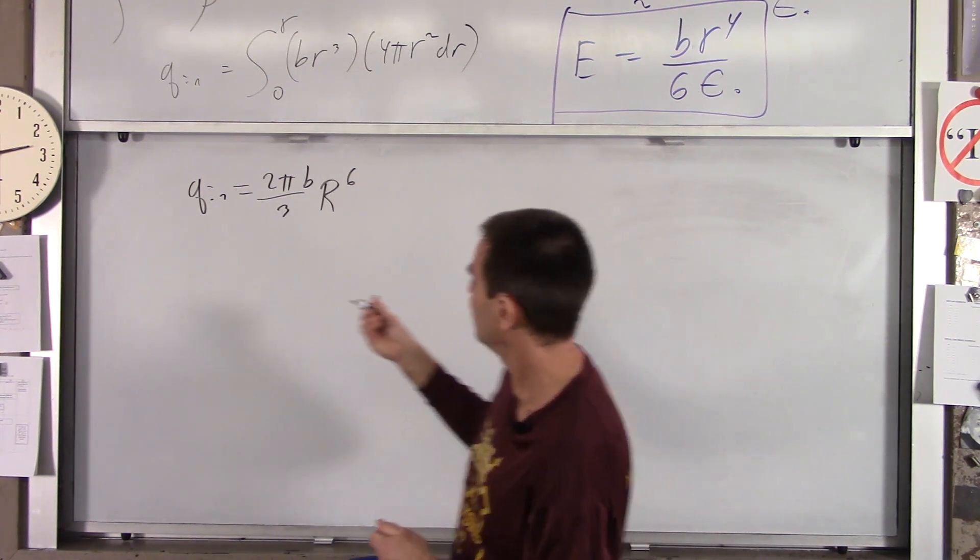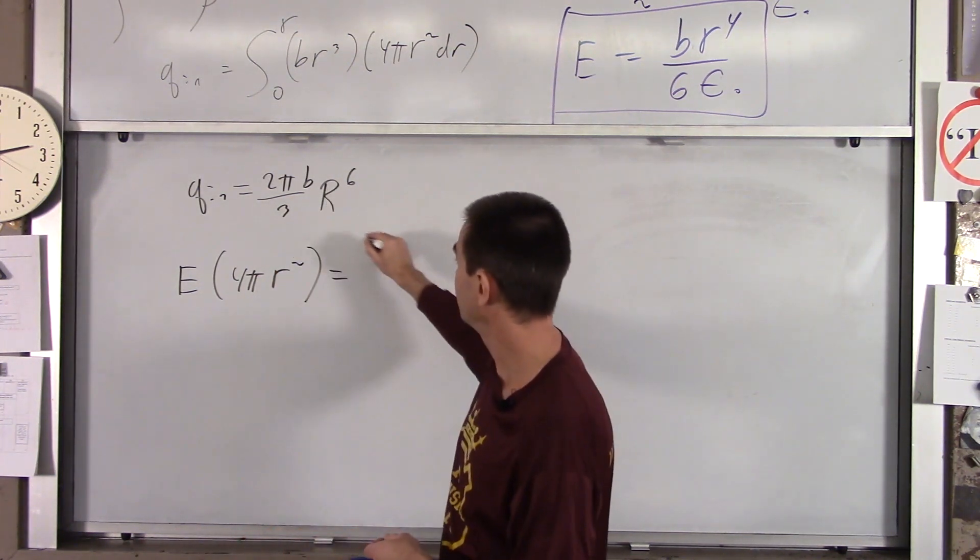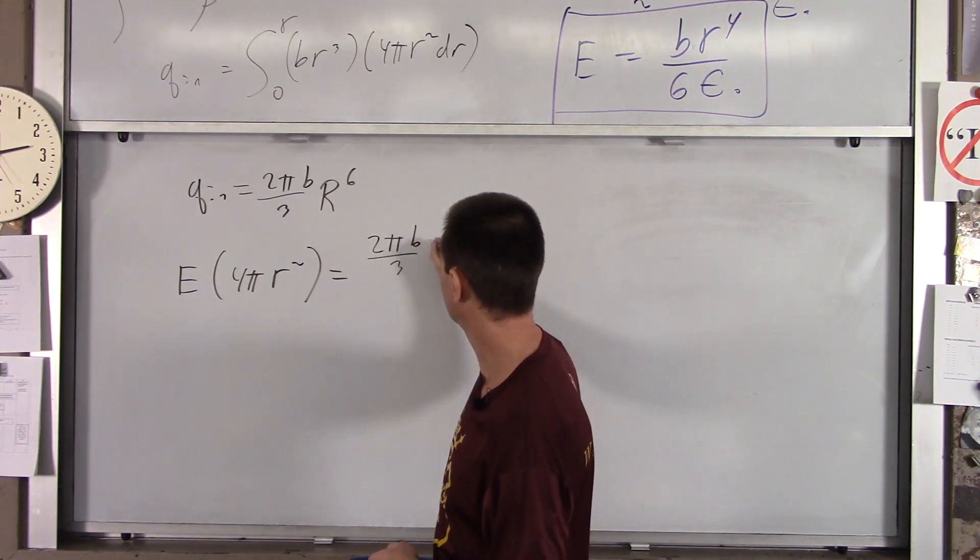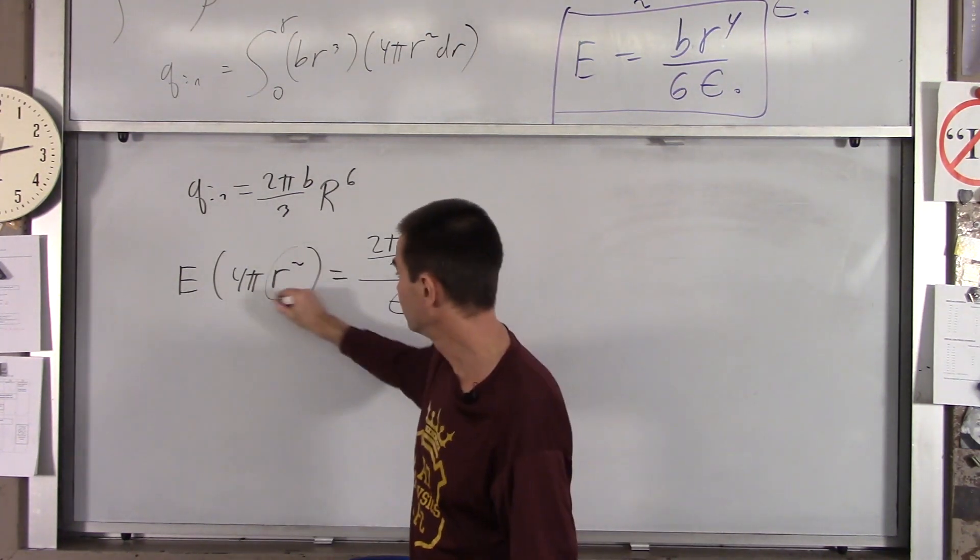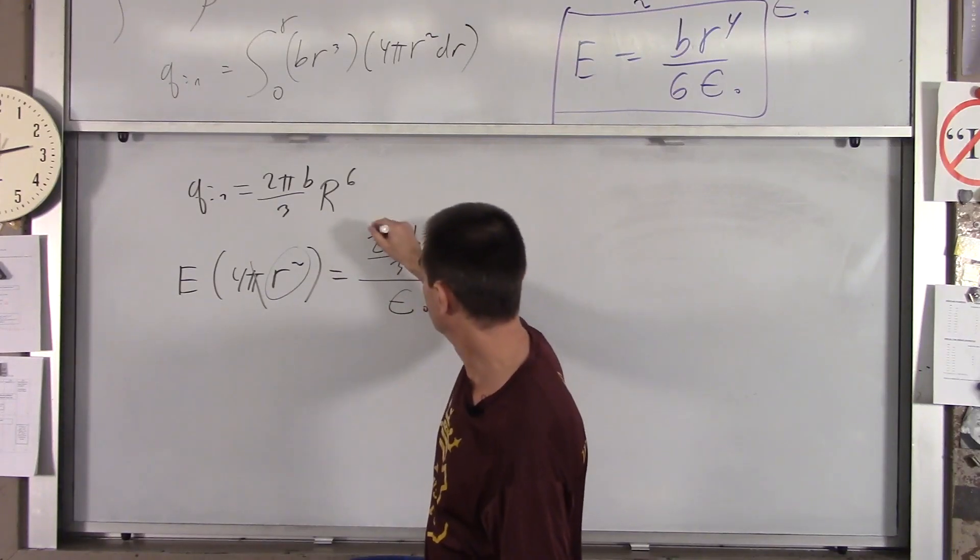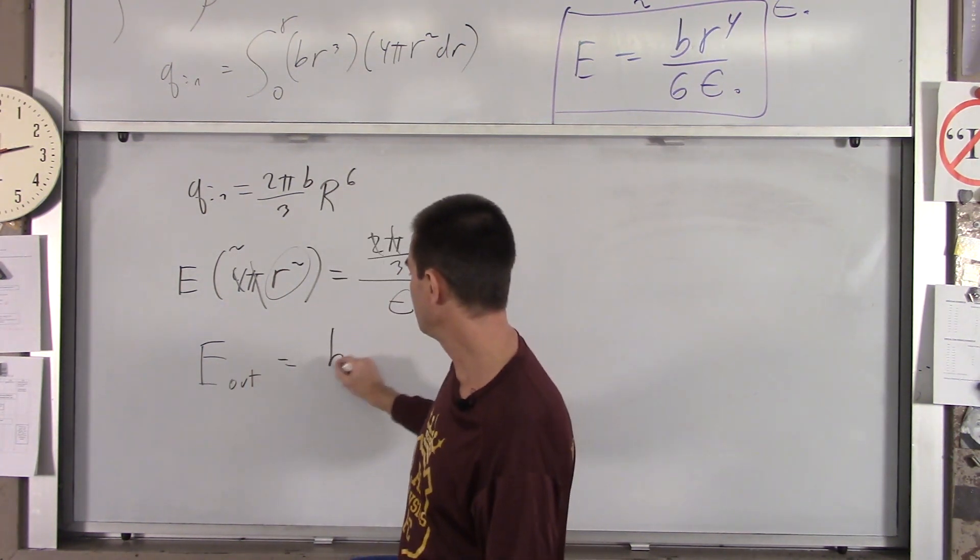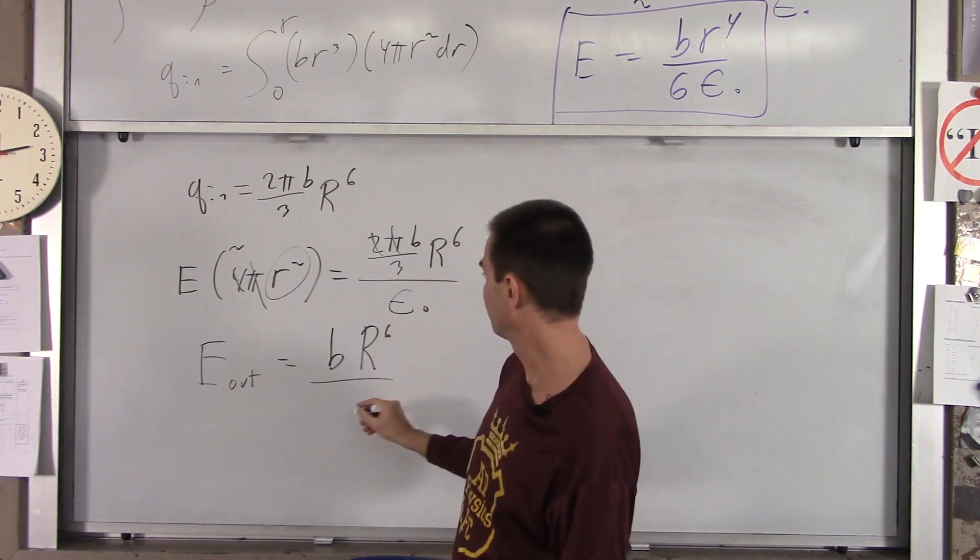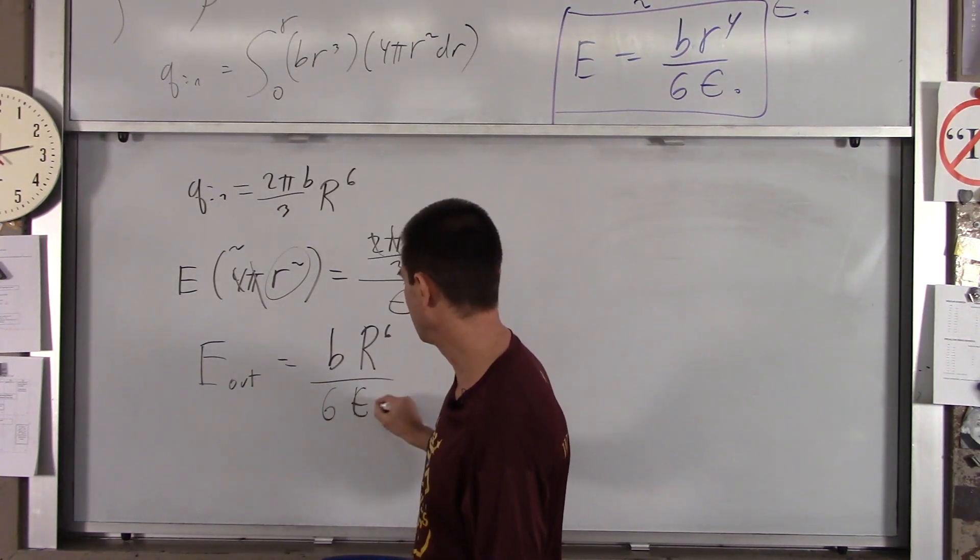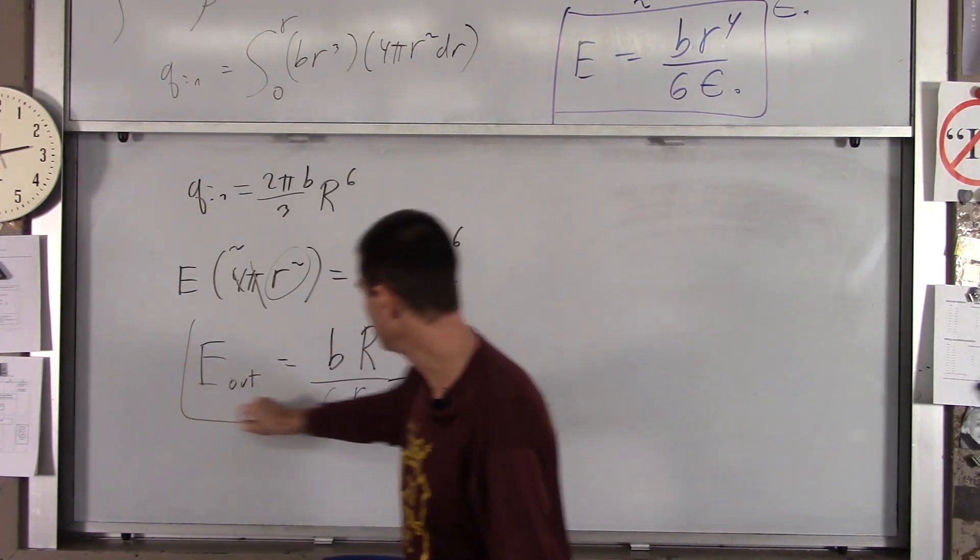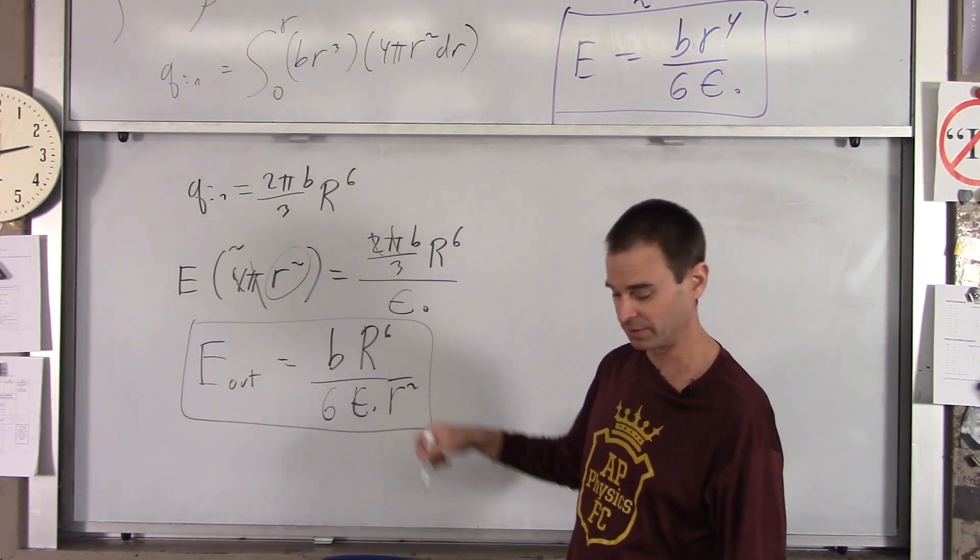So let's see if we get that. So we're going to use Gauss's law. E times the area, which is 4 pi little r squared, equals q_in, which is this stuff, 2 pi b over 3 big R to the sixth, all over epsilon naught. Well, sure enough, the only variable here is little r squared. Again, your pi's drop out, the 2 and this cancel to 2, and you get E outside this thing is equal to b big R to the sixth over six epsilon naught little r squared. So that is E outside this thing, and it does follow an inverse squared law. It's some constant times one over r squared.